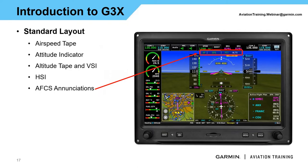At the very top are your AFCS enunciations. If you've seen our GFC 500 presentation, there are some G3X references there — we do differentiate slightly in the order items appear compared to other airframes. I'm not going to go into a whole lot of detail on that today. I do have another webinar coming up about the G3X autopilot, where we'll talk more about that. But this is a standard feature you will see at the top of your primary flight display.